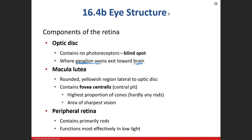Not far from the optic disc is a ring-within-a-ring structure. The outer ring is the macula lutea. Within that is the fovea centralis — that's where you have the sharpest vision, with almost all cones, since cones are responsible for visual acuity and sharpness.